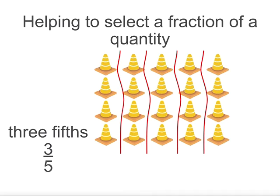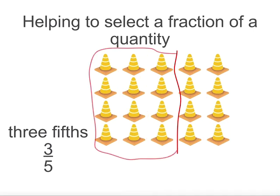If we want 3/5, 3 lots of 4 is 12. So 3/5 of 20 equals 12. You can see when it is organized into an array, the answer is easier to find.